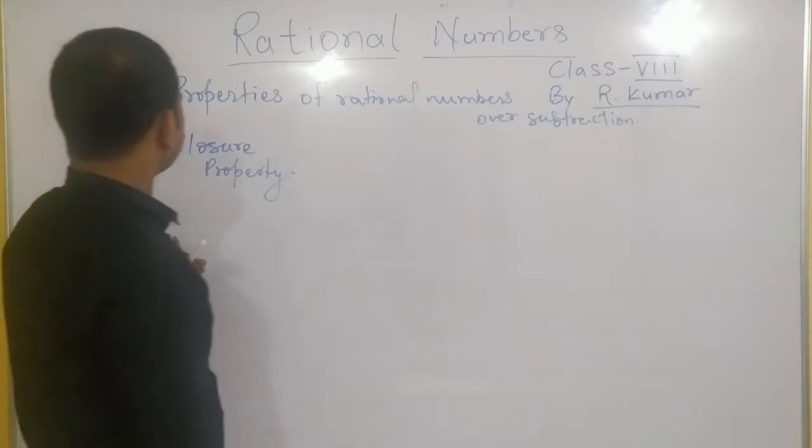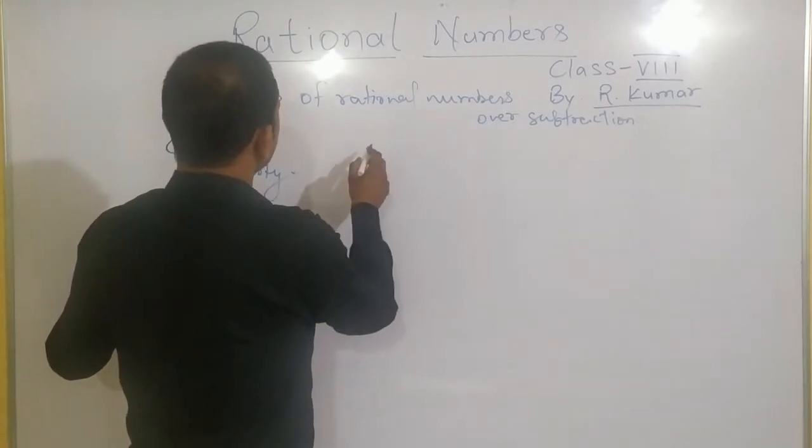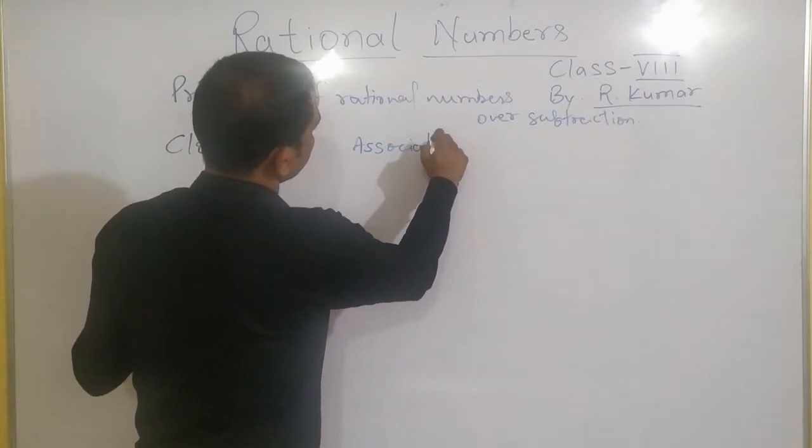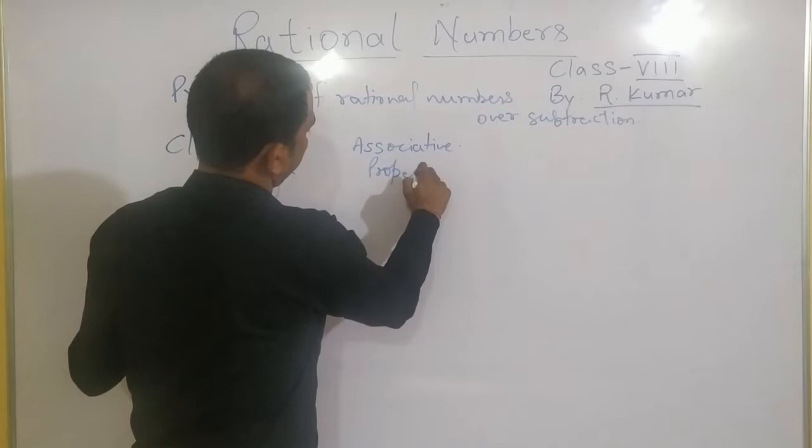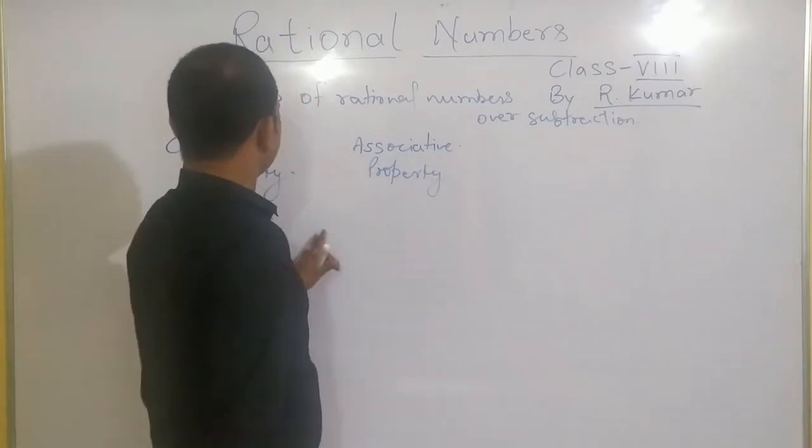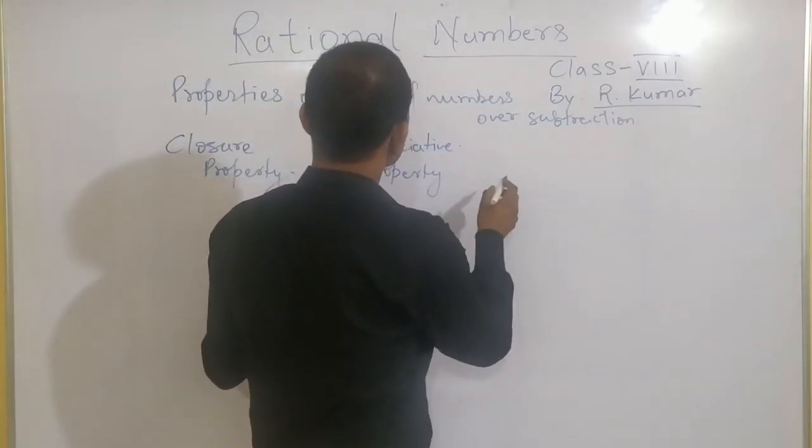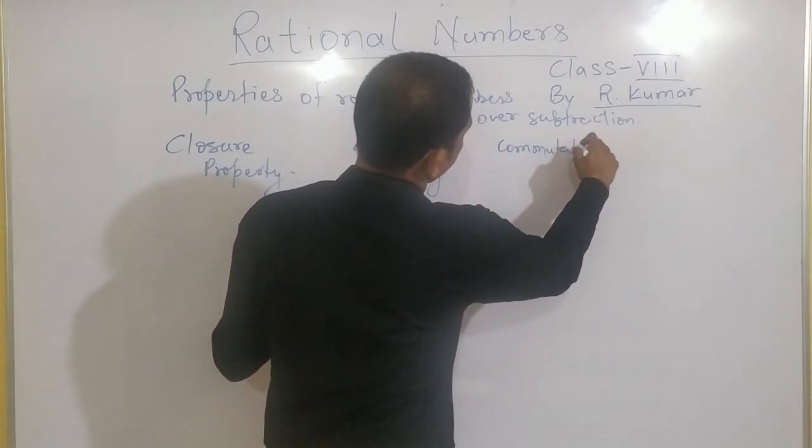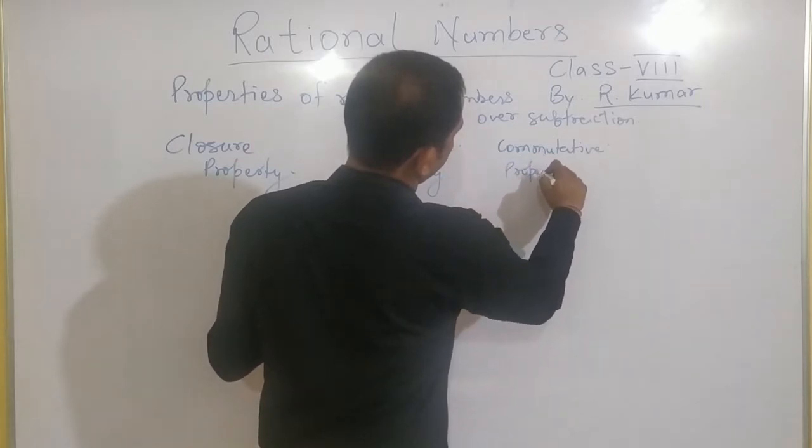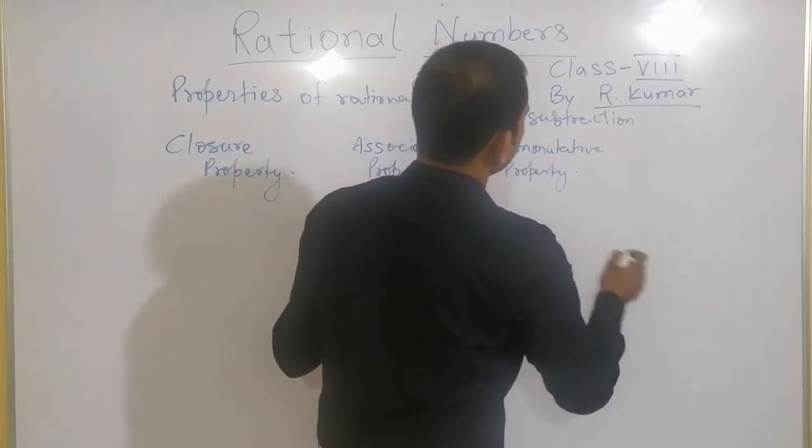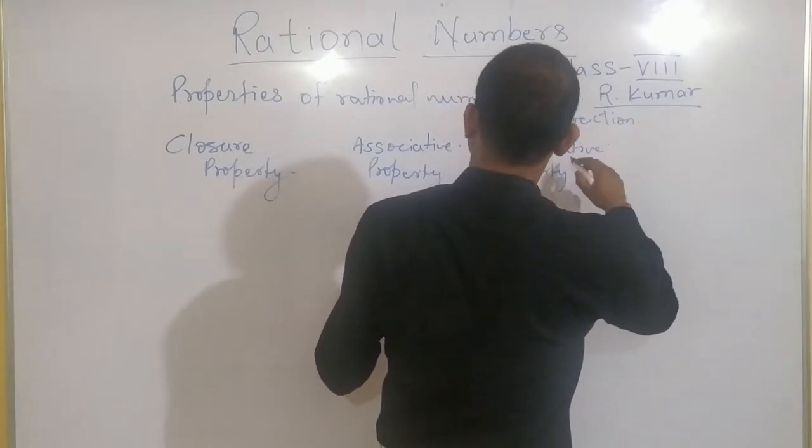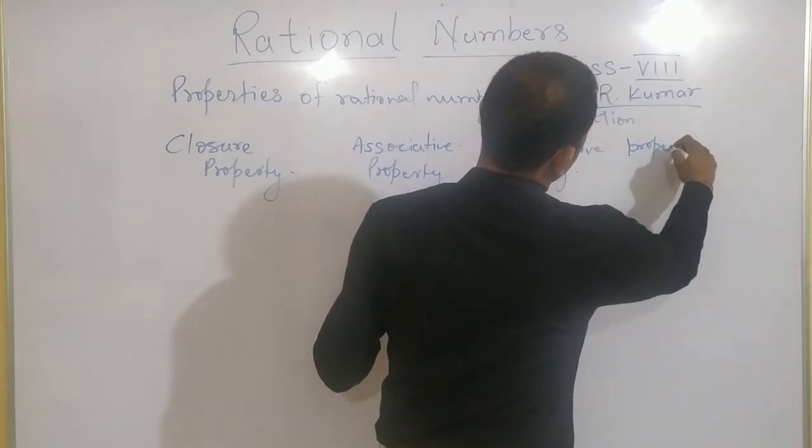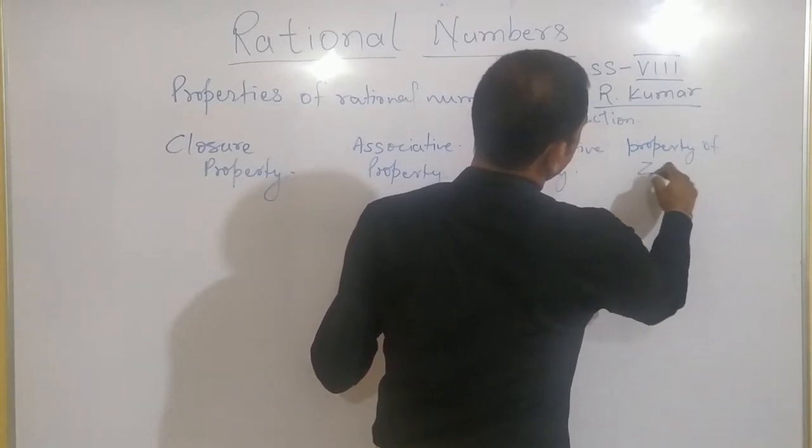The next one is associative property. Then next, commutative property. And last, property of 0.